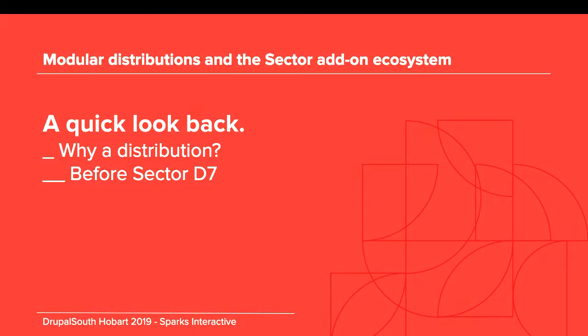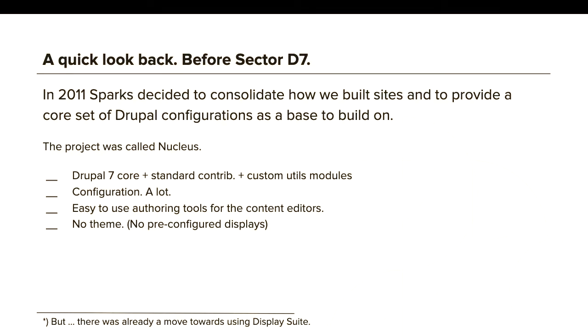History lesson: before Sector D7. Around 2011 we decided how to consolidate sites. You don't want a million different sites that work in a million different ways. Drupal lets you do all of these things, but do you really want to when you reach 50 to 100 sites under customer support? The project was called Nucleus. It was very basic, but the core is still what we are doing today — Drupal 7 core, standard contrib modules we love and know work, reliable maintainers, and some custom materials modules. We configured a lot, it was easy to use for authoring tools and content editors, and our clients jumped on board.